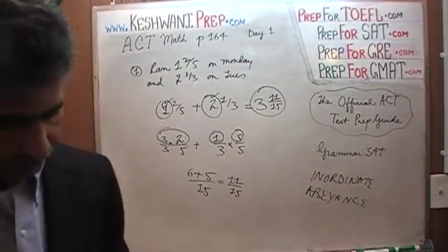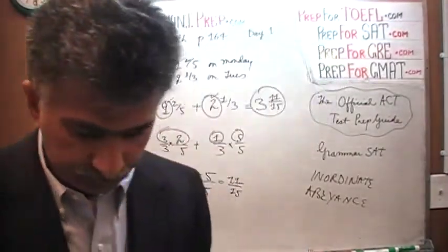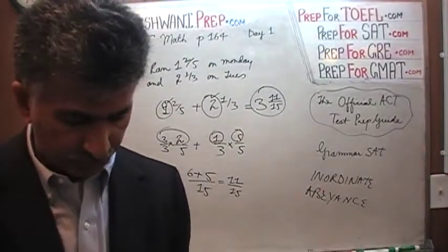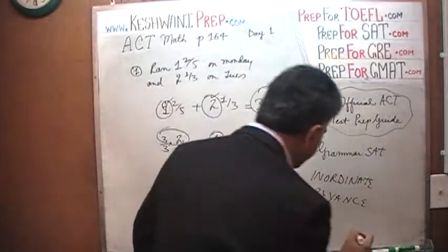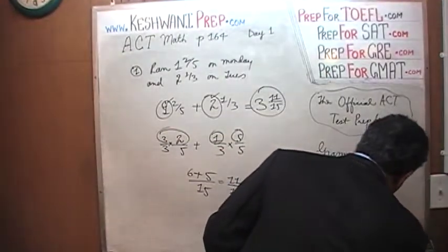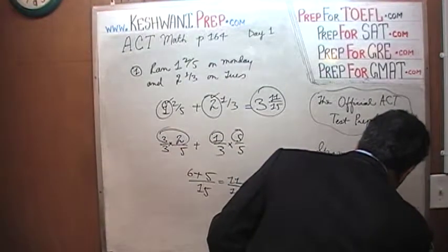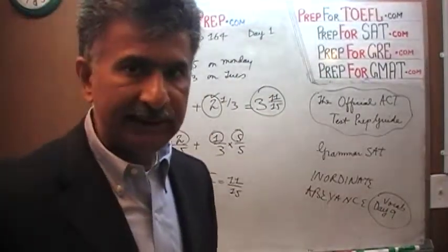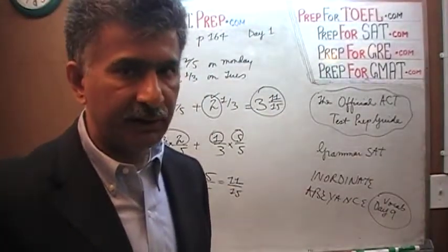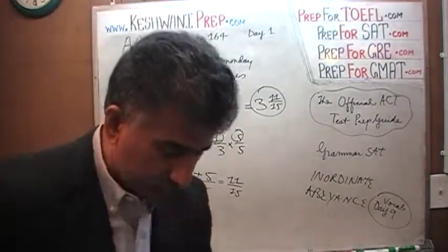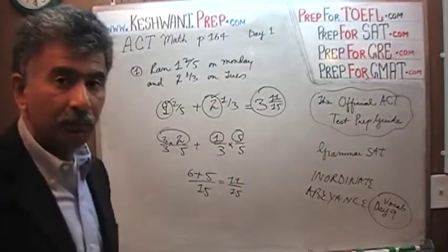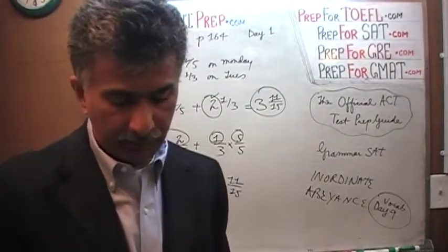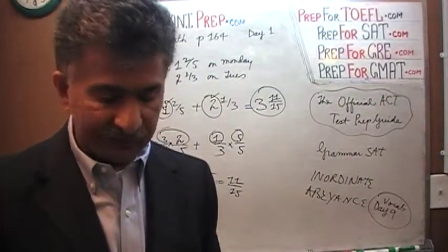Don't carry the 1 and the 2. For the word 'abeyance,' just type ACT vocabulary words, day 9, along with my name, and the video will pop right up. I'm not sure if you have learned 'inordinate' — inordinate means excessive, unreasonable.